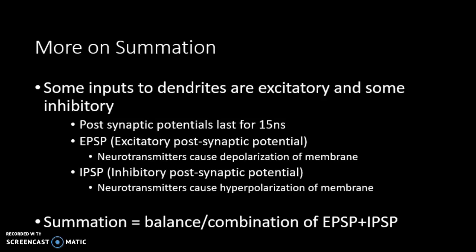Some inputs to dendrites are excitatory and some are inhibitory. Because we don't want continuous activation from the multitude of sensory messages, inhibitory interneurons are strategically placed within neural networks. The CNS can create an IPSP — inhibitory postsynaptic potential — in which neurotransmitters cause hyperpolarization of the membrane, increasing the stimulus required for an action potential. For example, this is why we can suppress pulling our arm away during an injection.